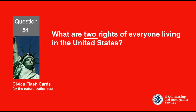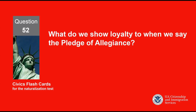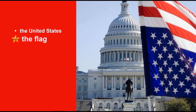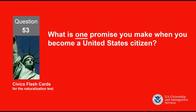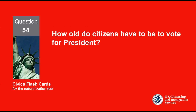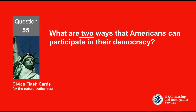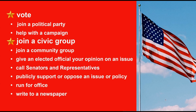What are two rights of everyone living in the United States? What do we show loyalty to when we say the Pledge of Allegiance? The flag. What is one promise you make when you become a United States citizen? Be loyal to the United States. How old do citizens have to be to vote for president? Eighteen and older. What are two ways that Americans can participate in their democracy? Vote. Join a civic group.